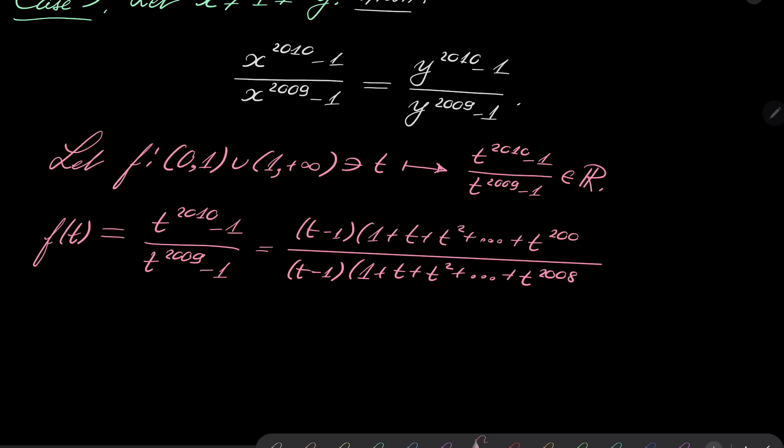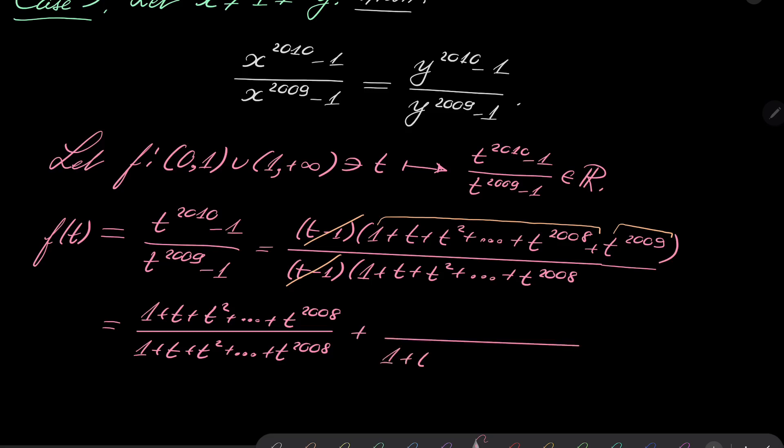Notice that t minus 1 cancels, and we can write our fraction in the following manner. We can group our numerator into two groups: (1 + t + t^2 + ... + t^2008) over (1 + t + t^2 + ... + t^2008), and separately (1 + t + t^2 + ... + t^2008) times t^2009.